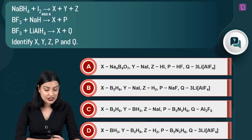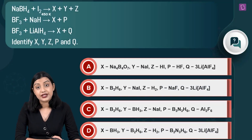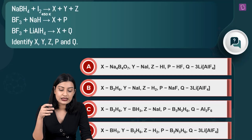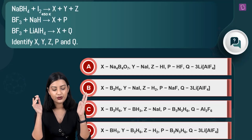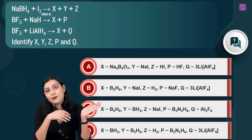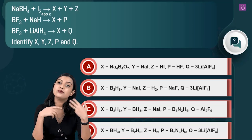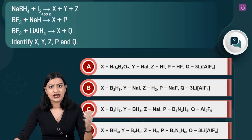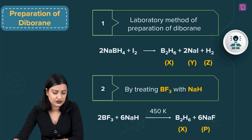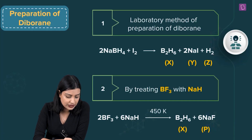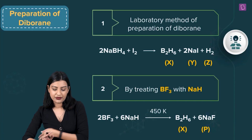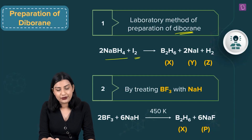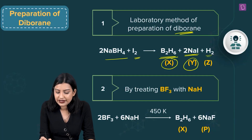The next question presents a scheme of reactions to identify products X, Y, Z, P, and Q — all involving boron compounds, covering preparation of diborane and orthoboric acid. In the laboratory method, sodium borohydride reacts with I₂ to give B₂H₆ (X), sodium iodide (Y), and H₂ (Z).